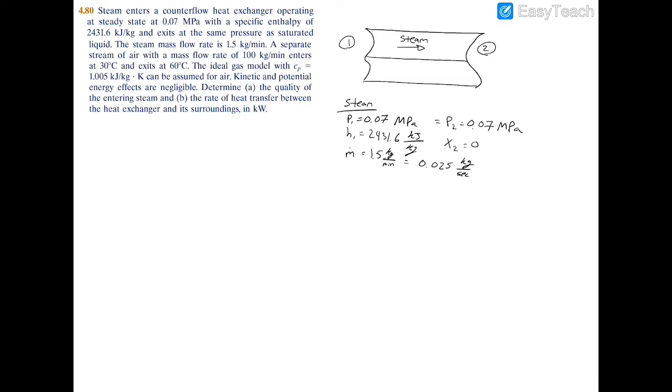Now in the other vent we're told that we have air, so counterflow goes in the opposite direction, so air we'll have the inlet as 3 and the outlet as 4. We're told that the inlet temperature for this air is T3 equals 30 degrees Celsius.